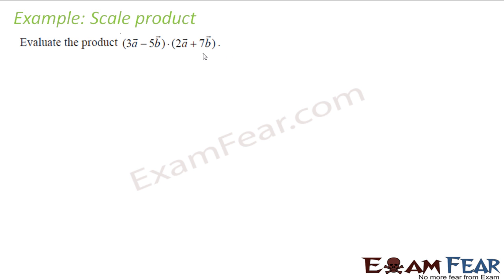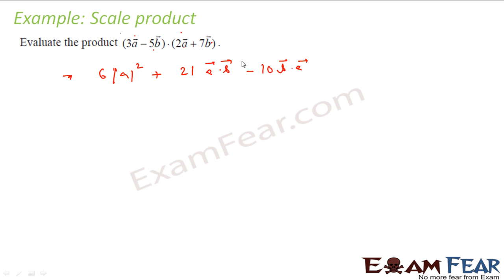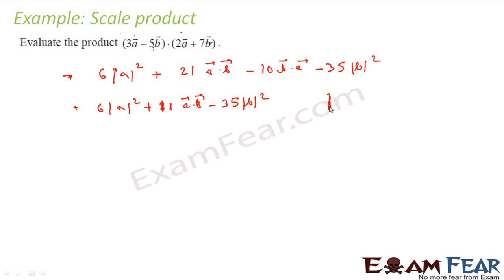Again, this is a simple question. We find the product of these two vectors. 3A into 2A gives 6 magnitude of A squared; plus 7 into 3 is 21, A dot B; minus 5 into 2 is 10, B dot A; minus 5 into 7 is minus 35, B dot B is magnitude of B squared. Since A dot B equals B dot A they combine to give 11 A dot B. So the answer is 6 magnitude of A squared plus 11 A dot B minus 35.